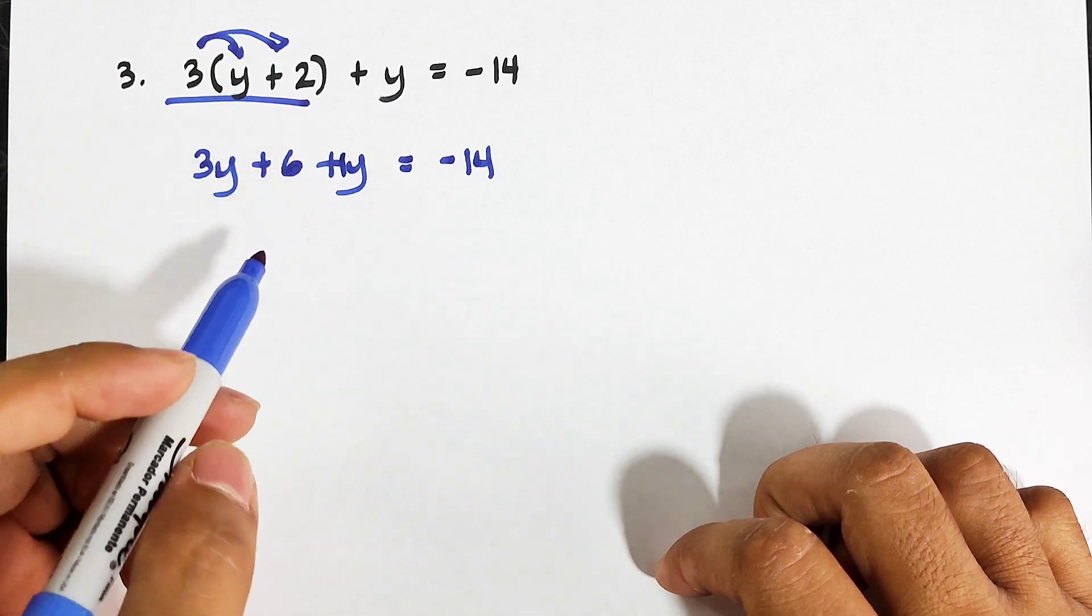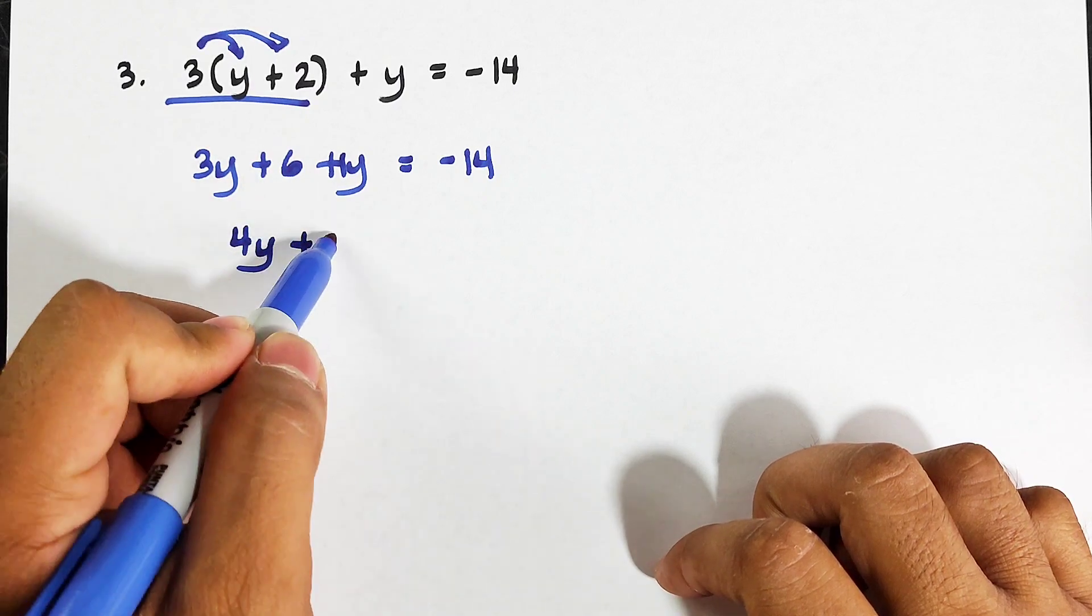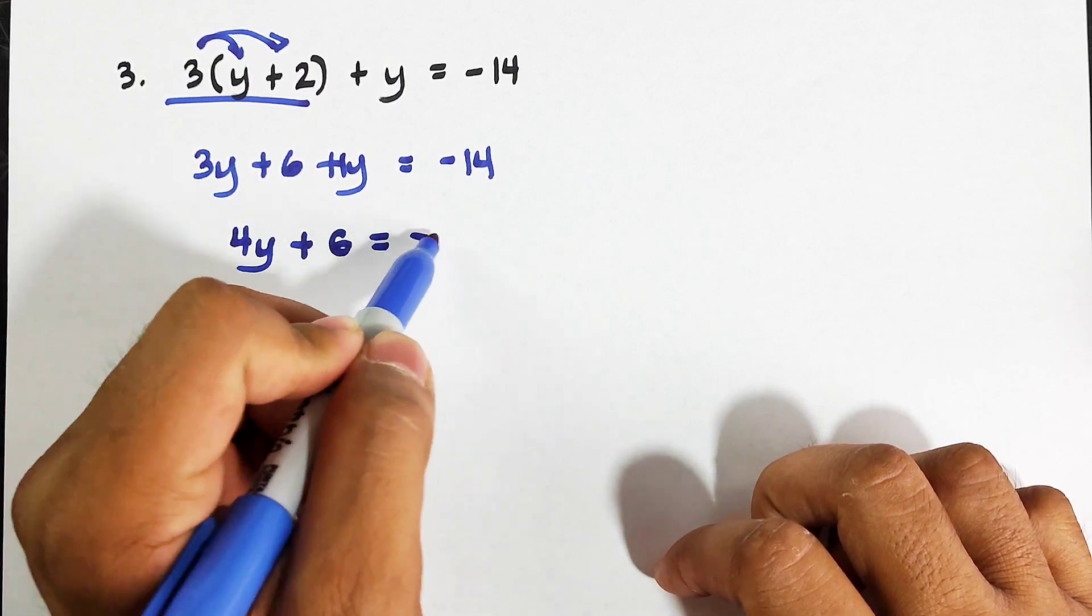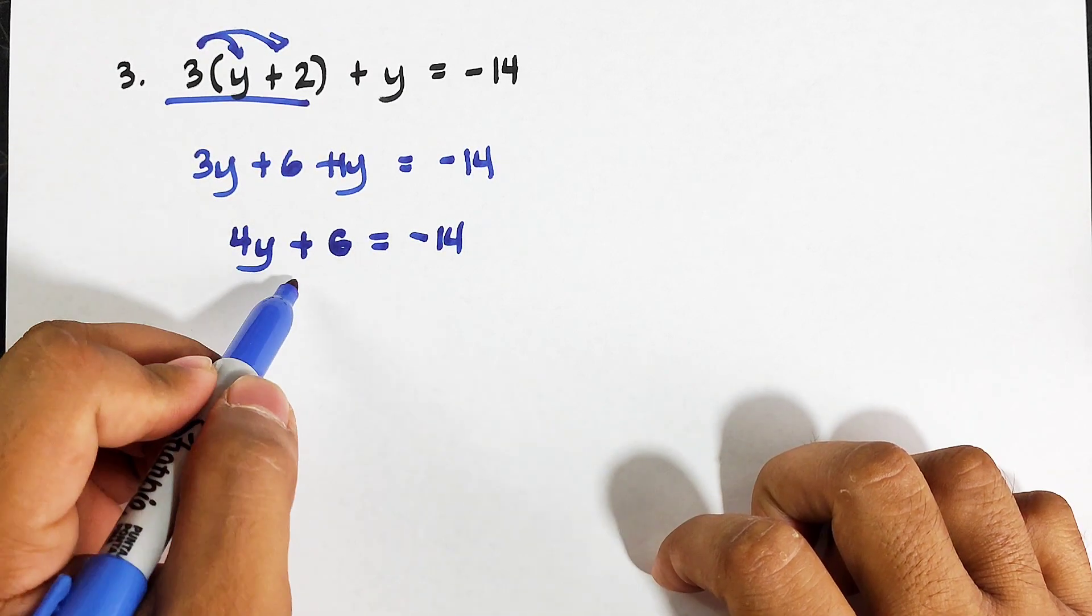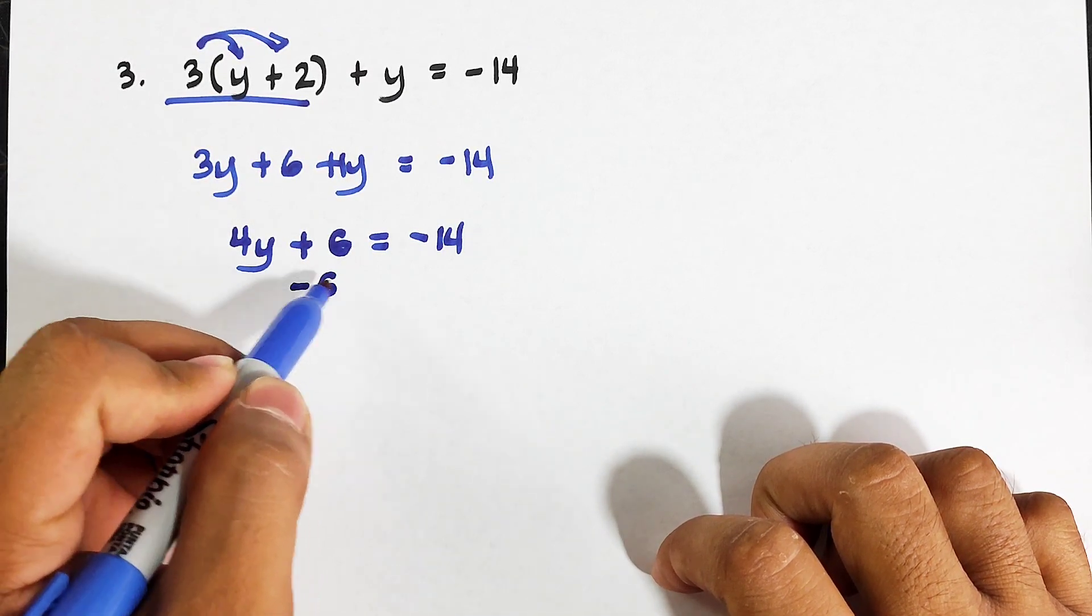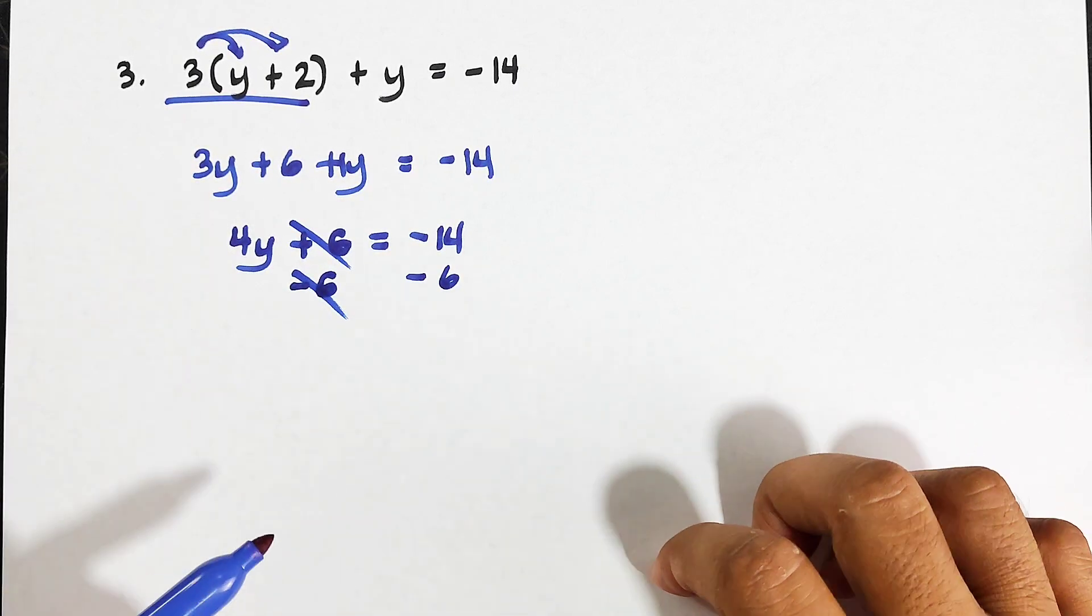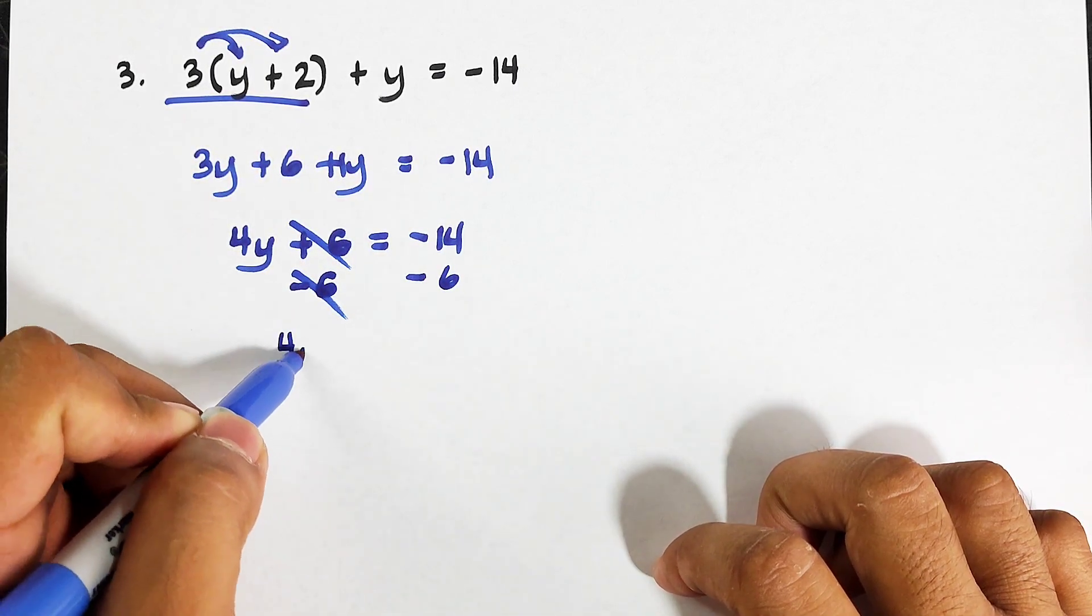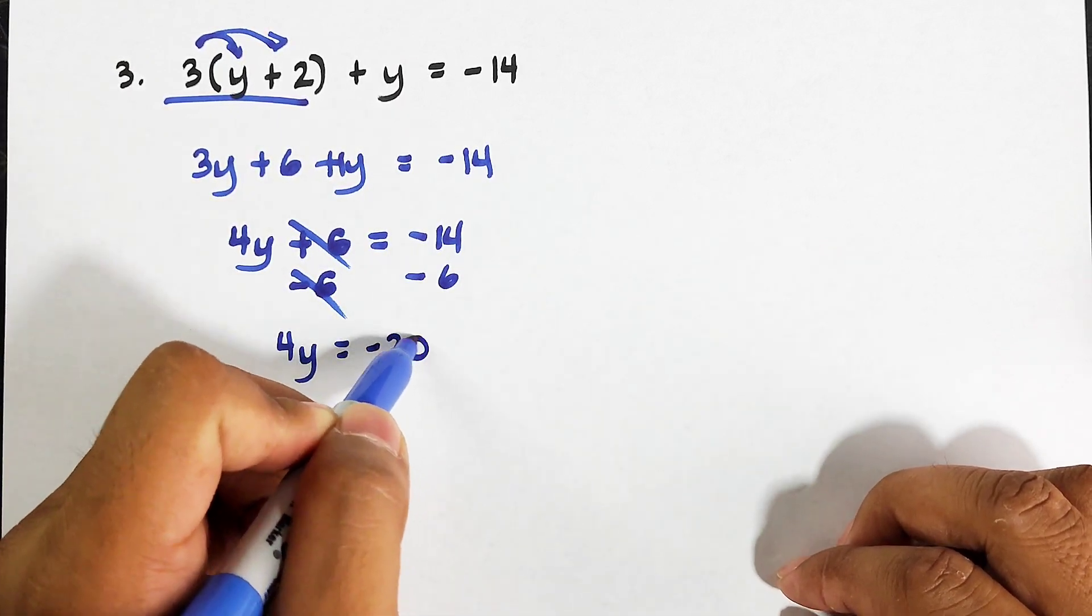And then plus 6 is equal to negative 14. Same process. This is plus 6, minus 6, minus 6. Cancel because that is zero. We have 4y, and on the other side we have negative 20.